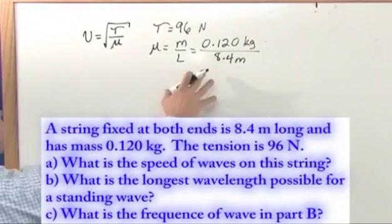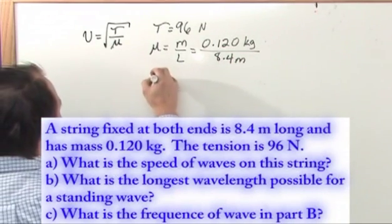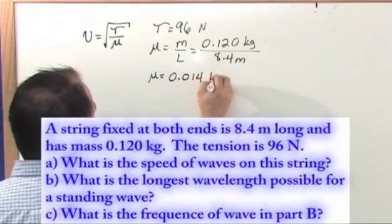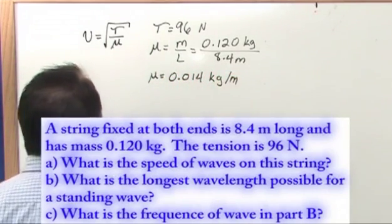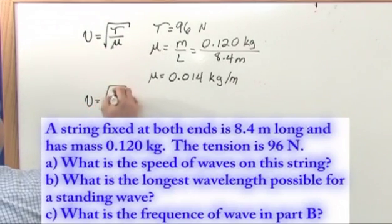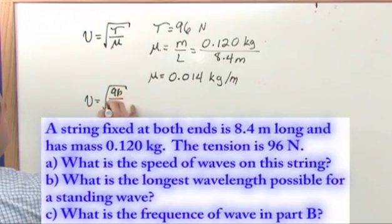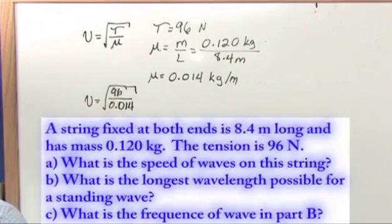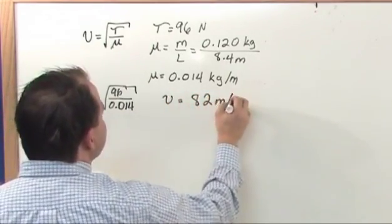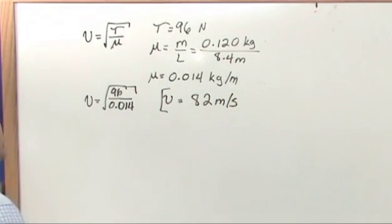So we do this division and get 0.014 kilograms per meter. We stick both of these quantities in here and get 96 divided by 0.014. Divide them, take the square root, and we get 82 meters per second. Pretty fast wave - 82 meters per second in that particular string.